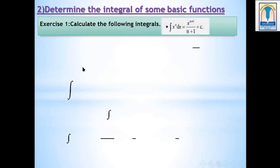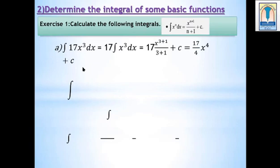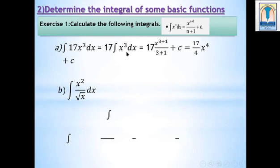Exercise 1: Calculate the following integrals. Part A: Integral of 17x cubed dx. We factor out 17: 17 times integral of x cubed dx. Applying the power rule, we get 17 times x^(3+1) over (3+1) plus c, giving a final result of 17 over 4 times x to the power 4 plus c.